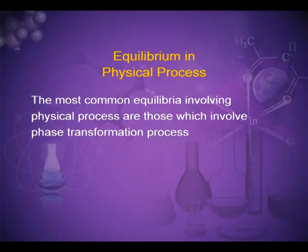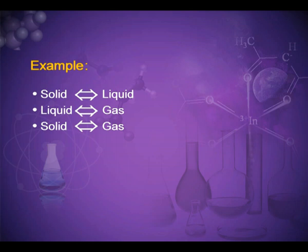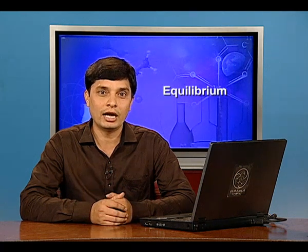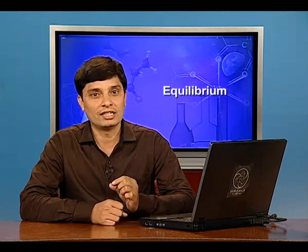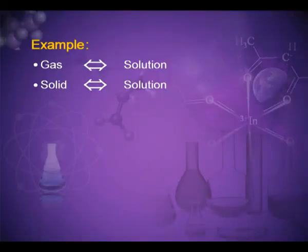Equilibrium in physical processes: the most common equilibria involving physical processes are those involving phase transformation. For example, solid can transform into liquid and liquid into solid; liquid can transform into gas and gas into liquid; solid can transform into gas and gas into liquid. Besides these, there are equilibria involving dissolution of solids or gases in liquids — gas changes into solution and back, and solid changes into solution and back.